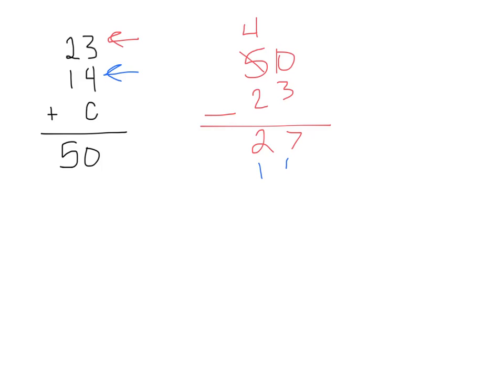So 27 minus 14: 7 minus 4 is 3, 2 minus 1 is 1, and that gives us 13. We don't have any more to subtract, so C is going to equal 13.